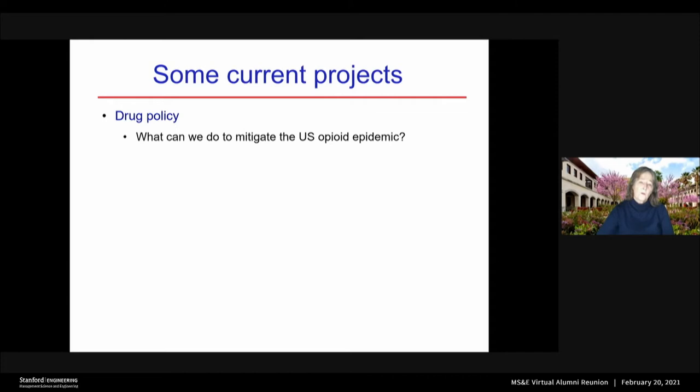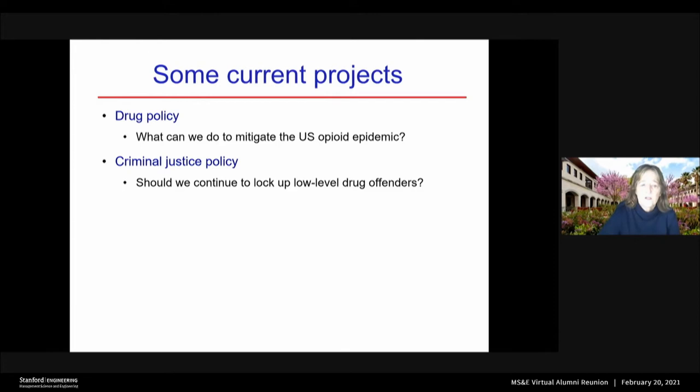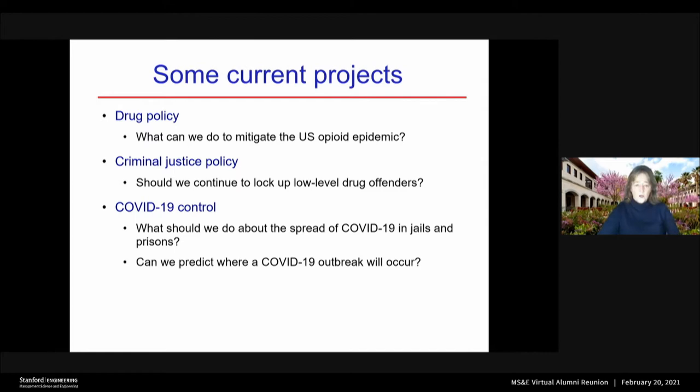So I'm going to tell you about four current projects we're working on in different areas. In the area of drug policy: what can we do to mitigate the US opioid epidemic? Criminal justice policy: should we continue to lock up low-level drug offenders? And the big question of the day, COVID-19 control: what should we do about the spread of COVID-19 in jails and prisons? Can we predict where a COVID outbreak will occur? For each of these, I'm going to tell you how my doctoral students and I, as our research group, have used analytical models to inform good public policy decisions.